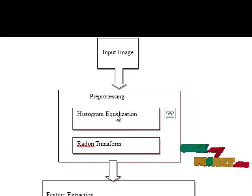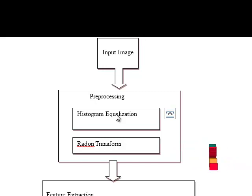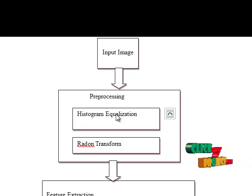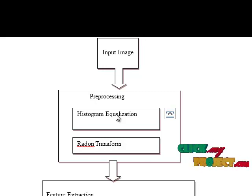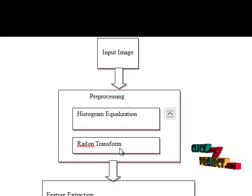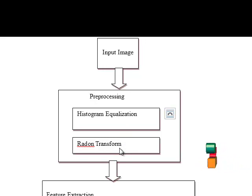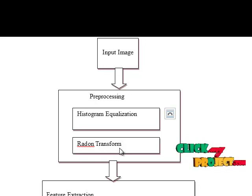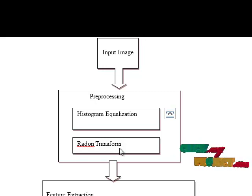In histogram equalization, colored eye images are converted to grayscale images. Then the contrast is improved by increasing the dynamic range of the image's histogram. This assigns pixel intensity values from an input image such that the output image contains a uniform distribution of intensities. Radon transform is then applied. Radon transform is widely used in computed tomography to create an image from scattering data associated with cross-sectional scans of an object. It transforms 2D images with lines into a domain of possible line parameters.